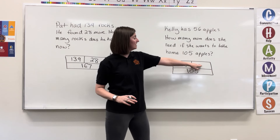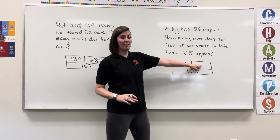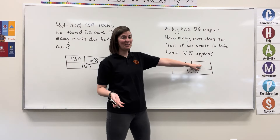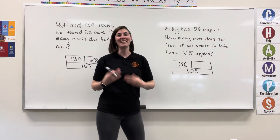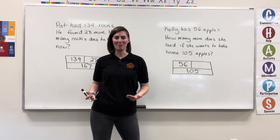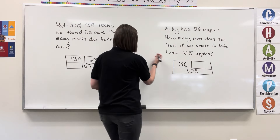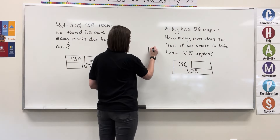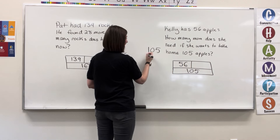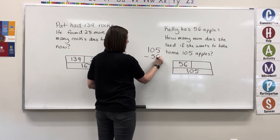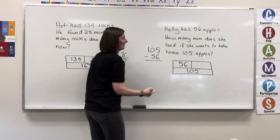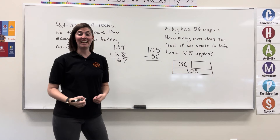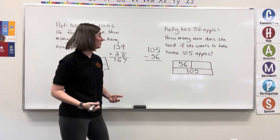Now, if we have a missing section of our addition, we know it's going to be a subtraction problem. So let's take 105 and subtract what she already has, to find out how much more she needs to get to her total.